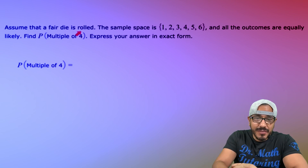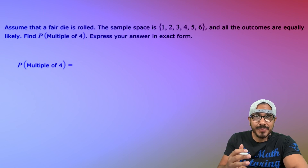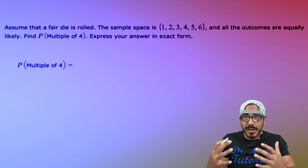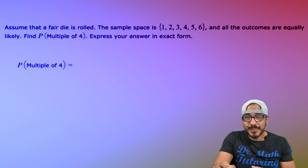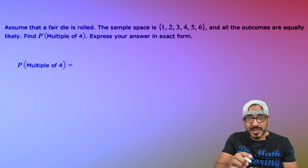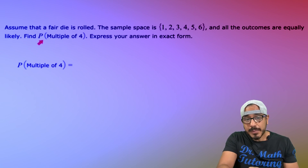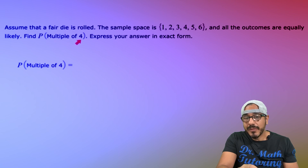So assume that we have a fair die — our classic example — and you're going to roll that die. All the possible outcomes make up our sample space. So this is our sample space right here: I could get a one, two, three, four, five, or six. And we know if this is a fair die, all those outcomes are equally likely. So for this question, we want to find the probability — the likelihood — that when you roll that die, it's going to be a multiple of four.